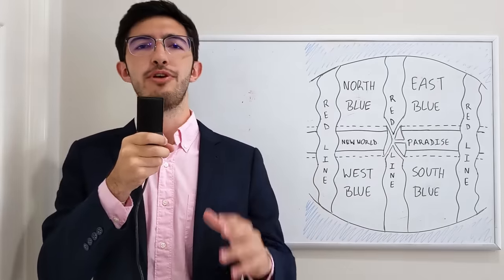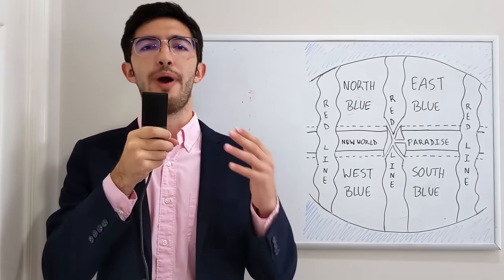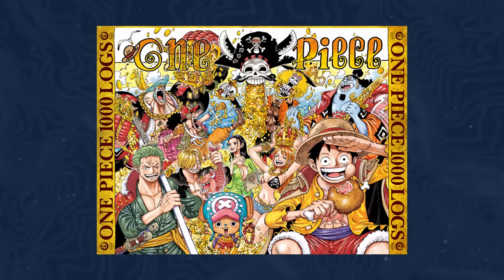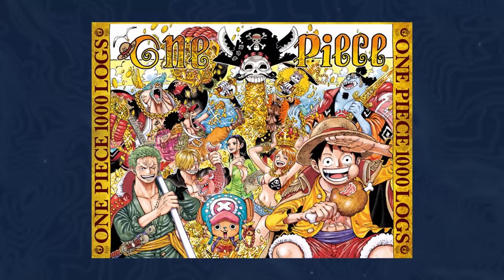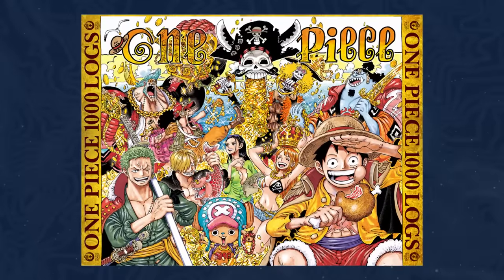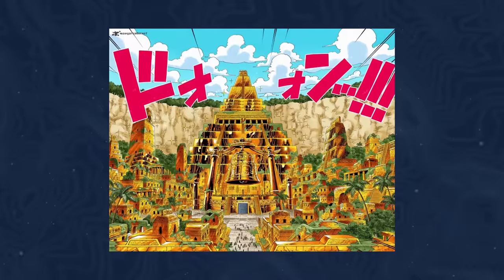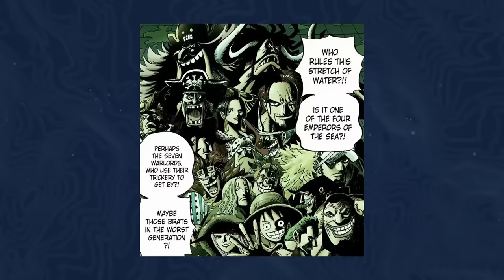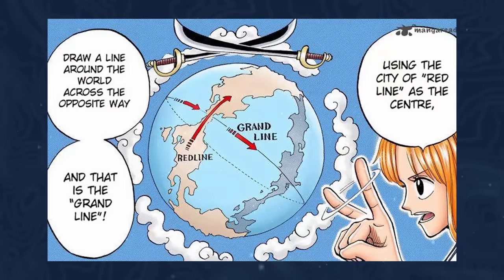Now One Piece and Geography are two things that very much go hand in hand, and that is because if you've read One Piece, you will know that it is one of the best, if not the best anime and manga in terms of world building, and Eichiro Oda does this through a mix of history, sociology, politics, but more than anything, geography.